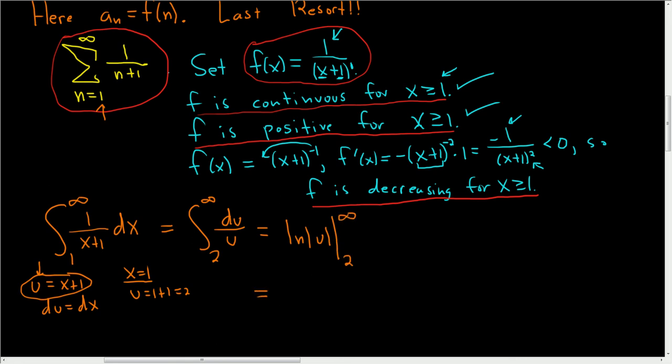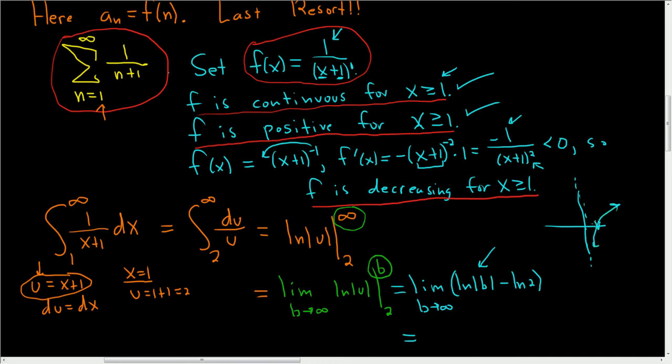Now how do you do this? Well you replace this with b and you take the limit as b approaches infinity. So this is ln u, and we're going from 2 to b. How do you evaluate this? First you plug in the b. So this is equal to the limit as b approaches infinity of the natural log of the absolute value of b minus the natural log of 2. And as b grows without bounds, as b approaches infinity, the natural log of the absolute value of b also approaches infinity. So this is just infinity.